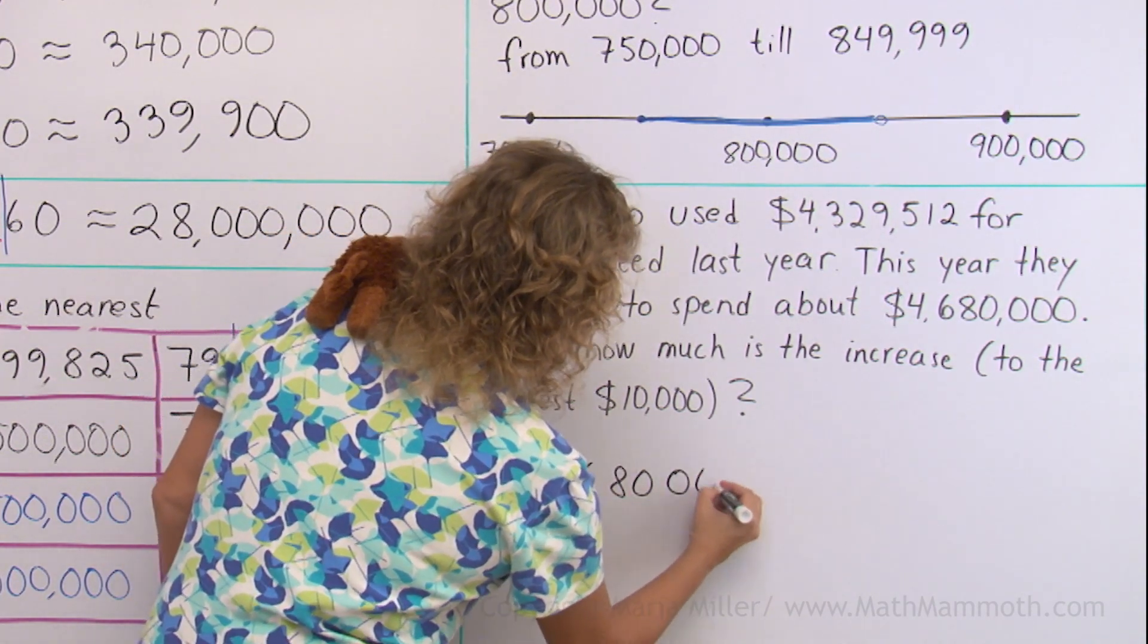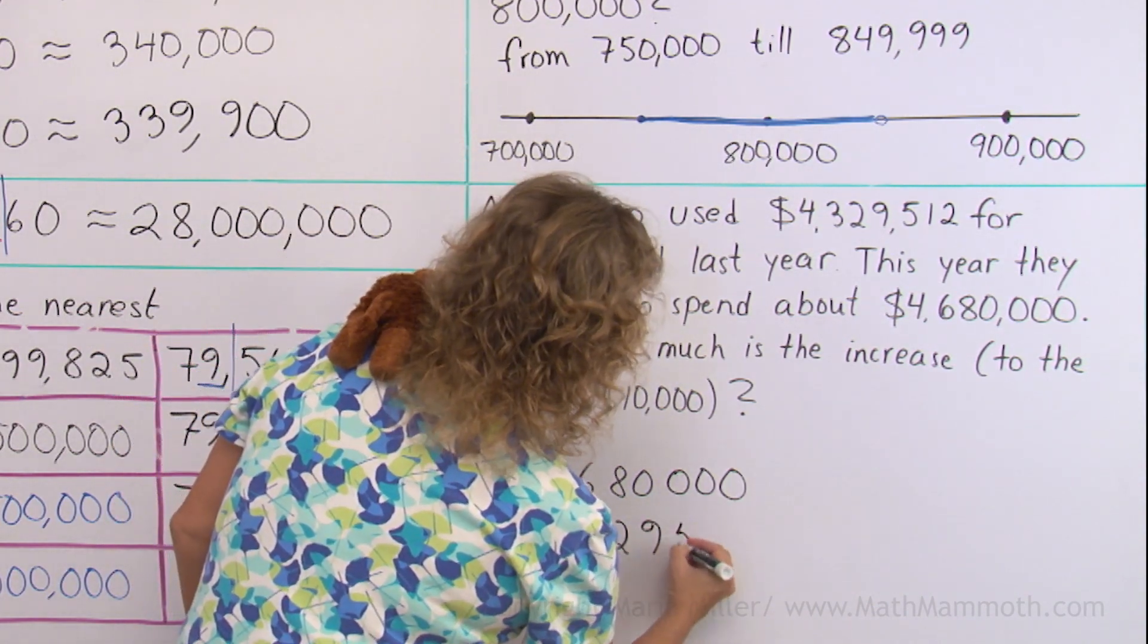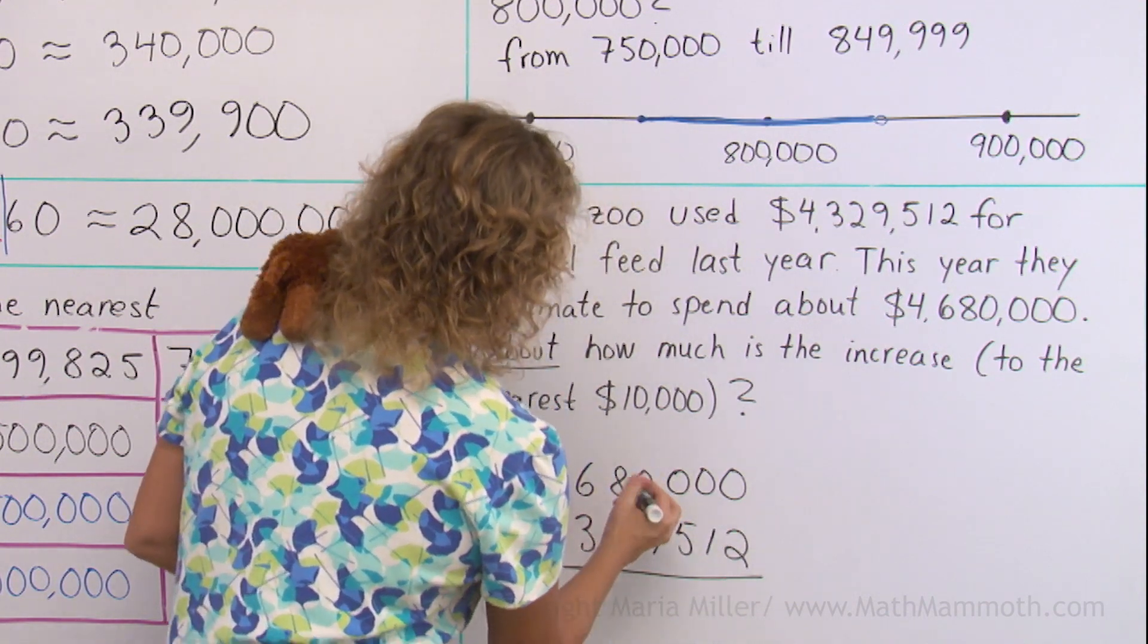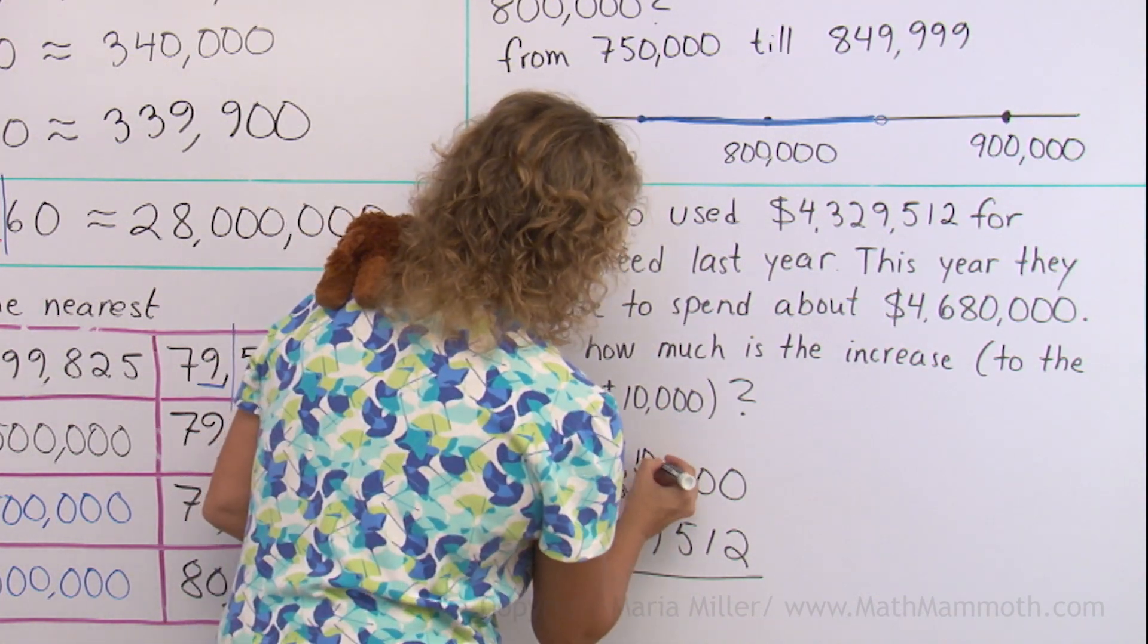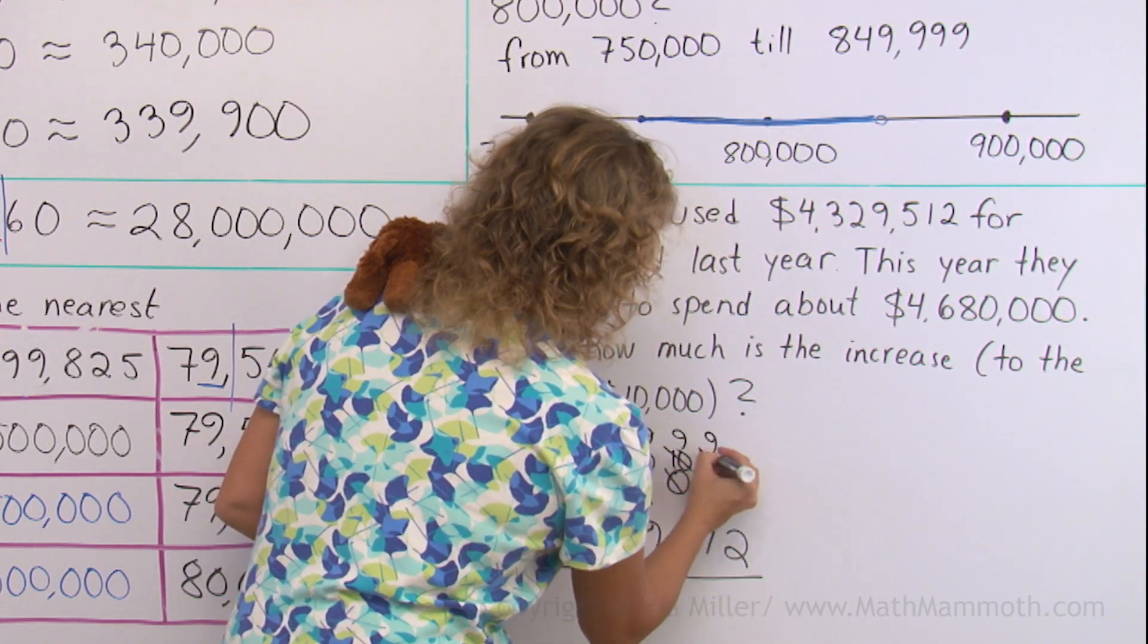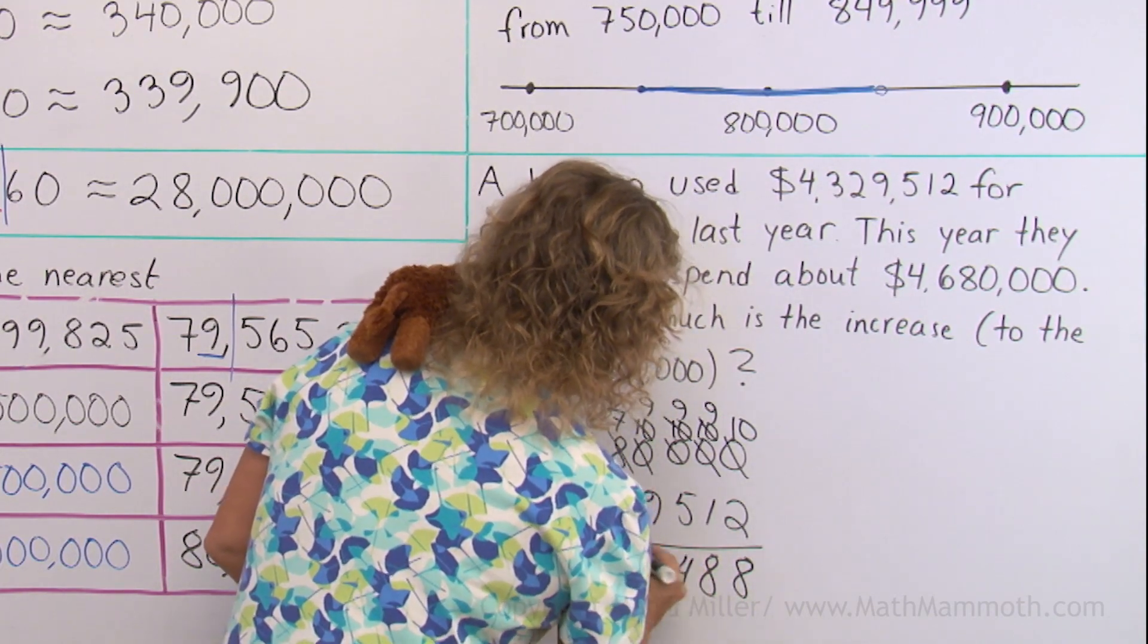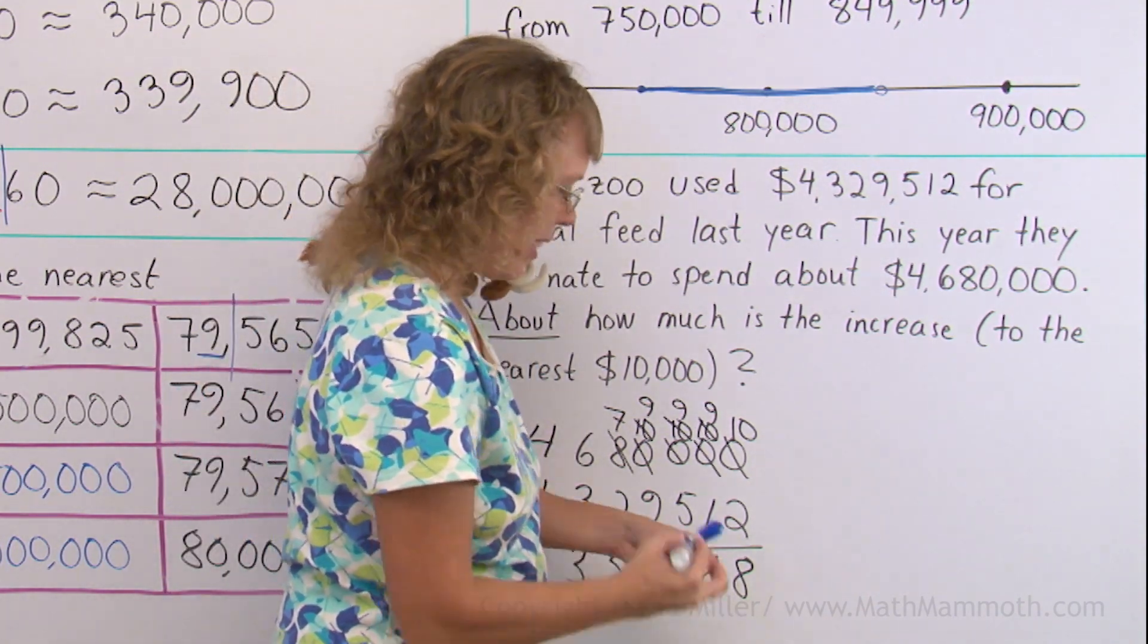So I'm going to subtract these numbers over here. 4,680,000 minus 4,329,512. Now over here we can subtract. We need to regroup. There's all these zeros. So I need to go all the way back to this 8. And then take from this 10 here. We have 9 there. Get my rows of 10s and 9s. 10 minus 2, 8. 9 minus 1, 8. 9 minus 5, 4. 10, 10, 5 and 3. We get 350,488.